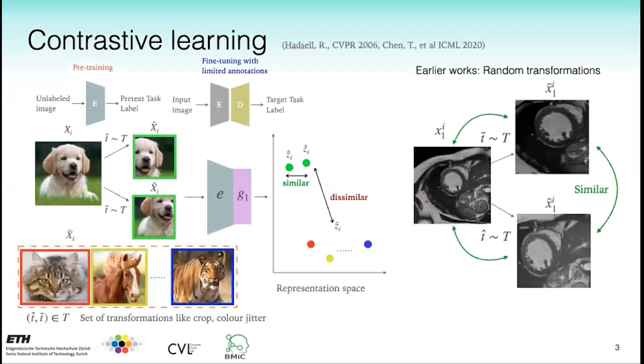Here we use contrastive learning to pre-train the network using unlabeled data where different transformations of an image should have similar representations and simultaneously be dissimilar to different images.